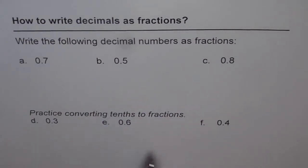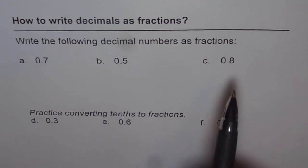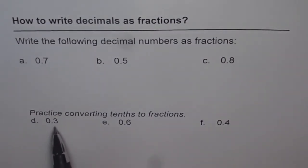We have six decimal numbers written here. As you will notice, all of them are tenths. This is seven tenths, five tenths, eight tenths, three tenths, six tenths, and four tenths. Now let us see how to write these decimal numbers as fractions.